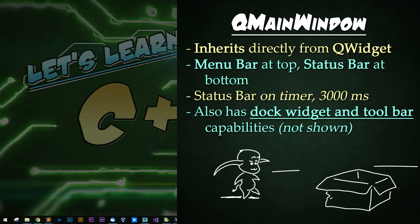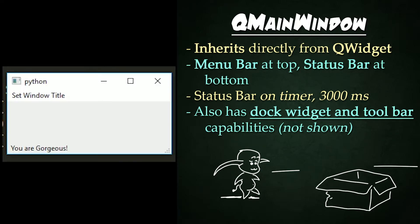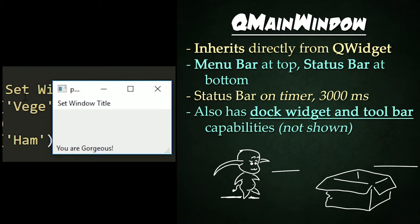QMainWindow inherits directly from QWidget and has a few major additions. Up top, you will notice a menu bar with one menu, and in that menu are two actions which have been separated. If we run the tool again, you'll notice a status bar at the bottom saying 'you are gorgeous,' because it's true. Notice that the message goes away after three seconds here.